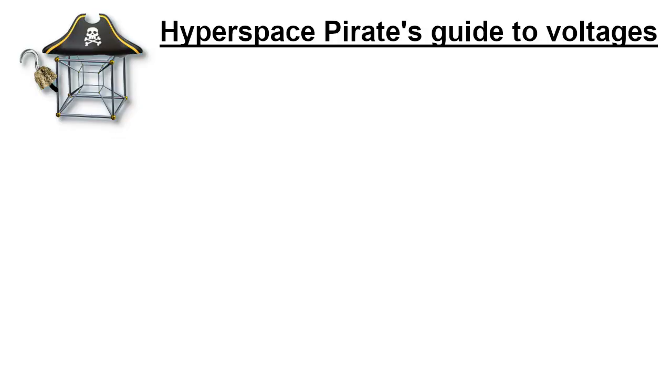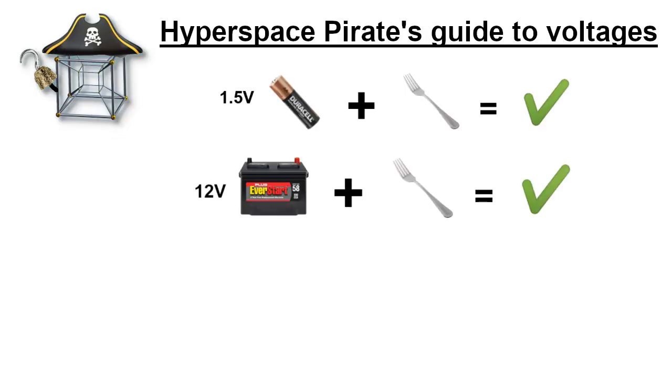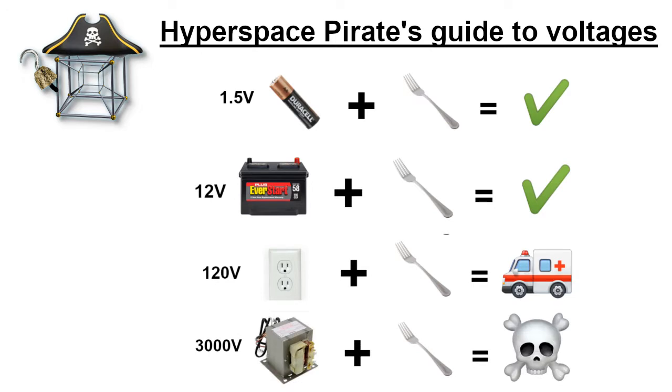But the most important part is the transformer inside the microwave. Microwaves have a transformer that can output close to 3000 volts at 1 amp. 3000 volts is a lot of voltage, but I'd like to take it a step further and put two transformers together to get 6000 volts. So here's how I'm going to do that.